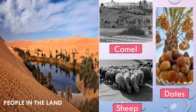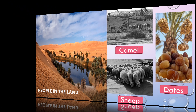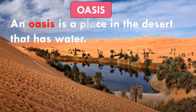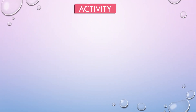Some people lived inland, away from the coast, at oases. They made a living by farming — they grew dates and kept animals like camels, sheep, and goats. An oasis is a place in the desert that has water.